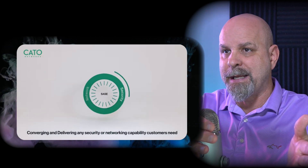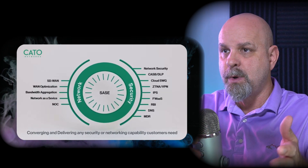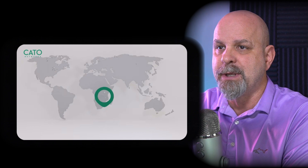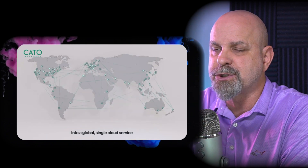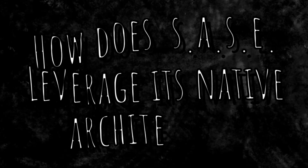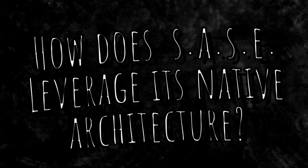If one security layer encounters an issue, another security layer can provide protection and ensure a consistent security posture across your network. SASE is cloud-native — most SASE providers are built in the cloud. It's distributed across different data centers throughout different regions and different parts of the world.